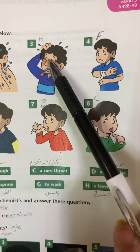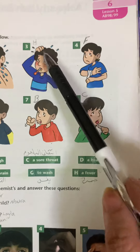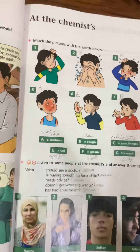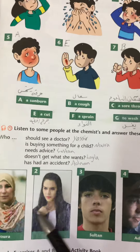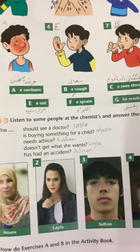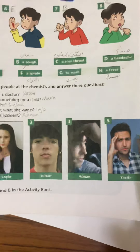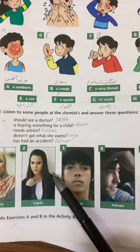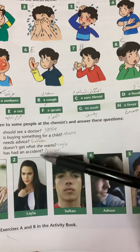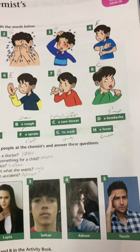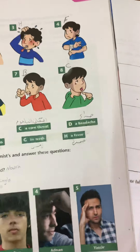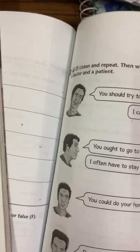Then we have customers here — like Nora, Layla, Sultan, and others. We have five customers who go to the chemist and ask for something. You need to match the questions with these customers. It is not very important — just learn the meaning. Now let's go to what is required from us, which is Exercise B.